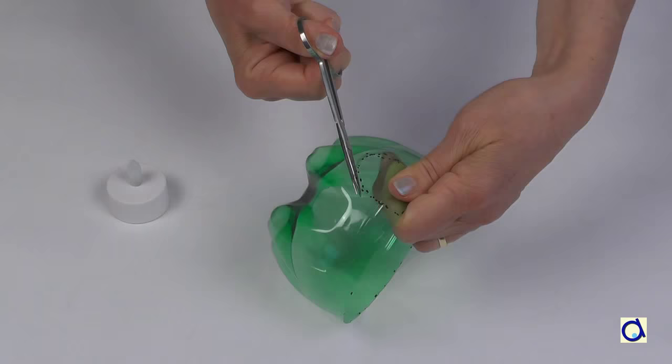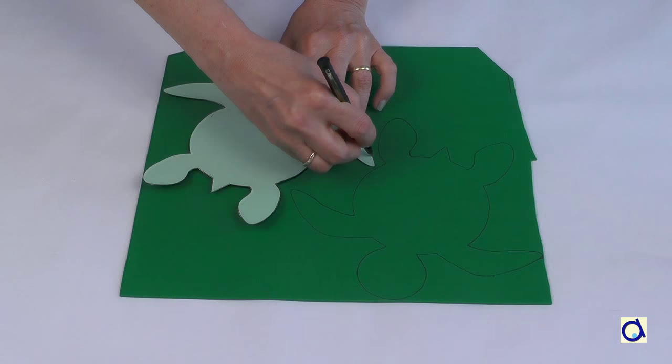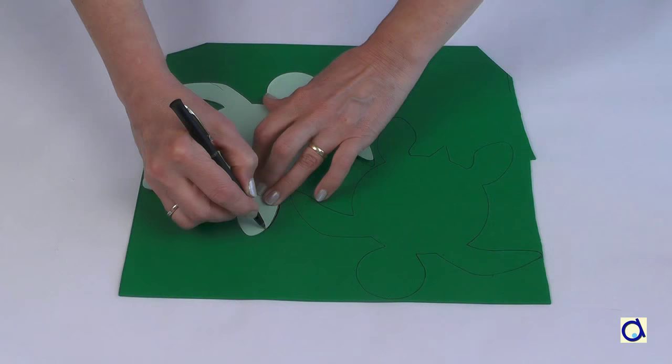Take the pattern of the turtle and draw it twice on a foam sheet. Because the soda bottle I used is green, I chose to use a green sheet of foam.